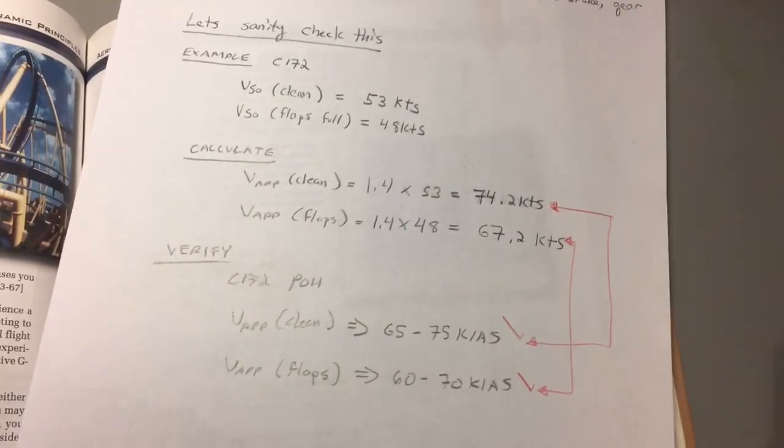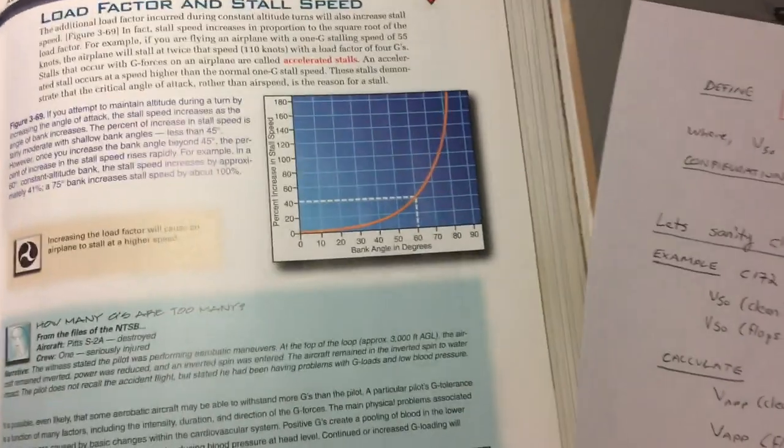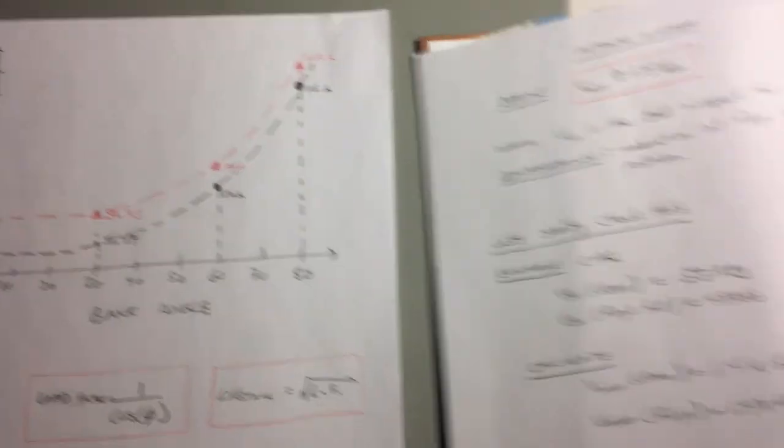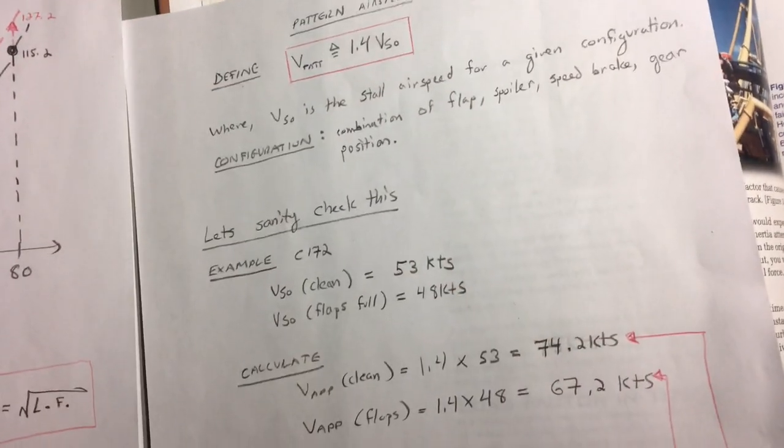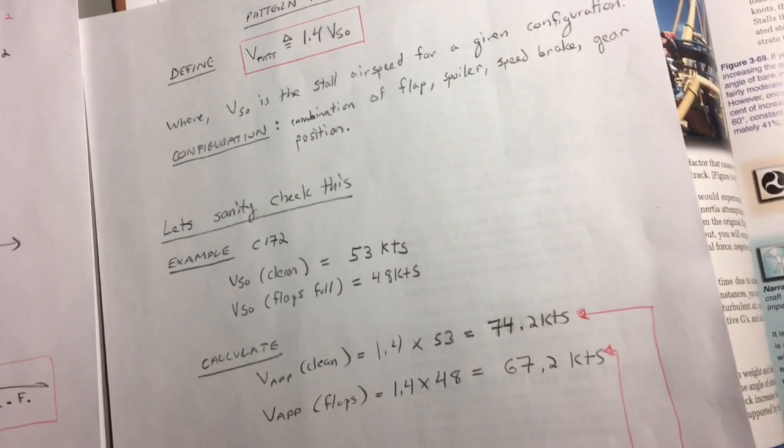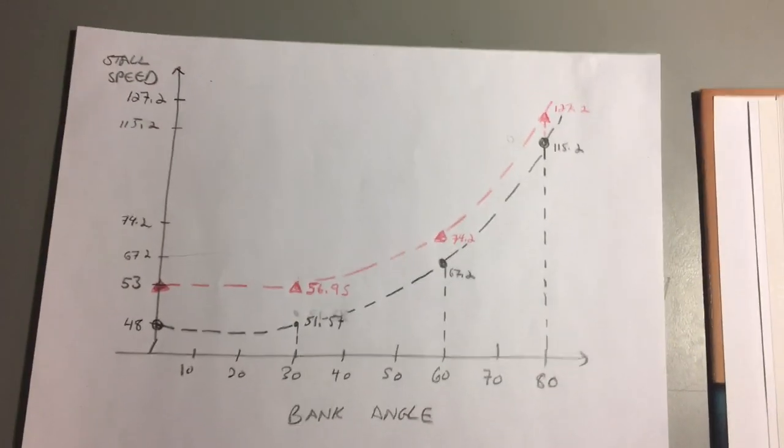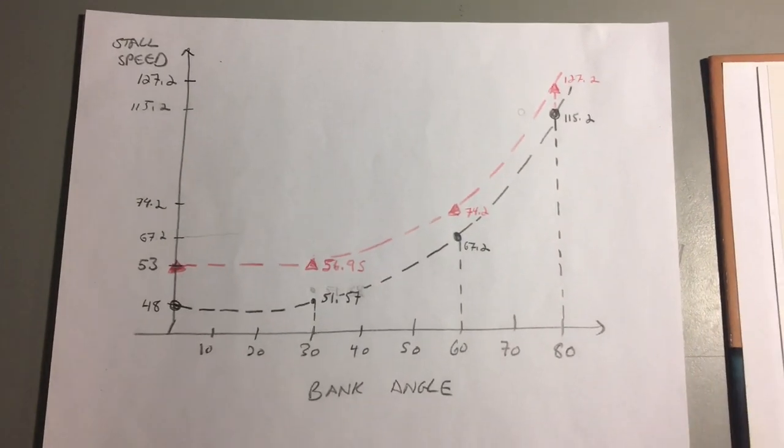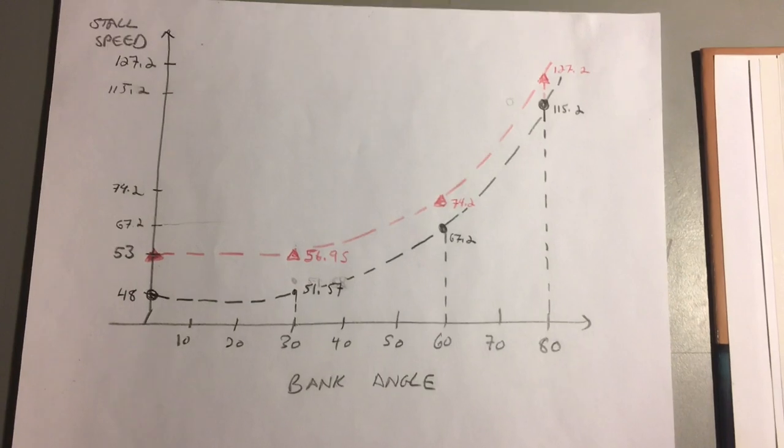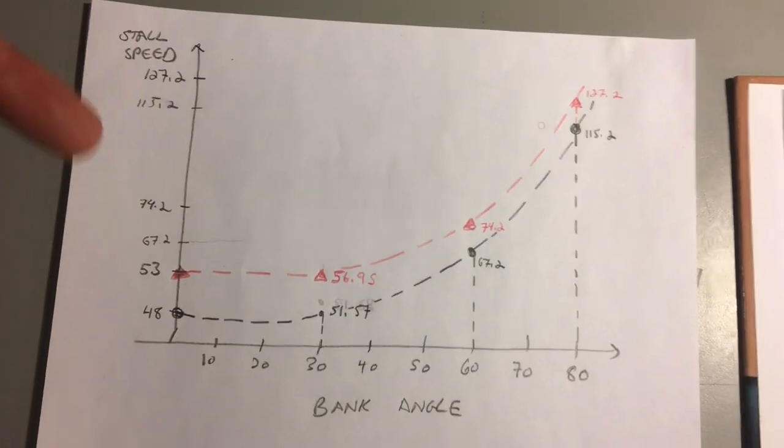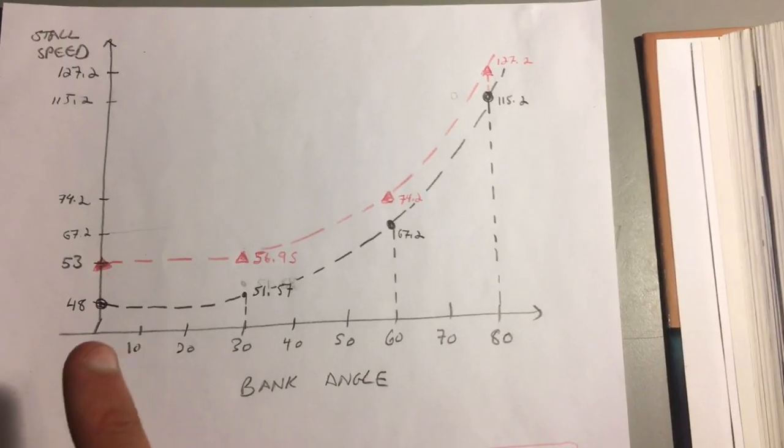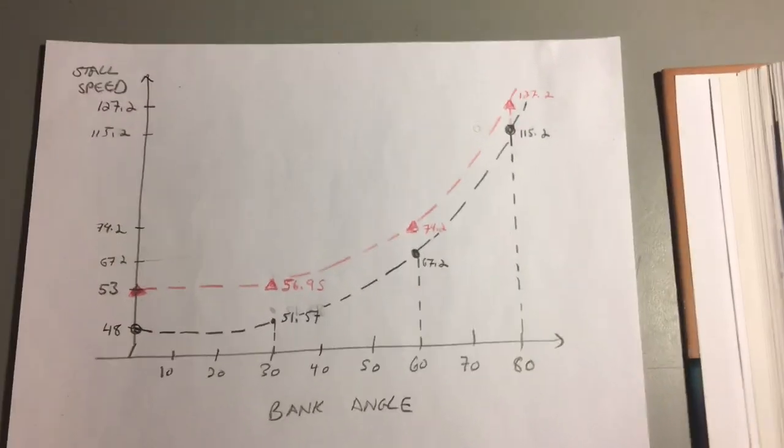Let's tie these numbers and this graph together in a tangible example of the Cessna 172. Remember our clean and dirty stall speeds were 53 knots and 48 knots respectively. I've taken those numbers and made a chart where you can see what the stall speed is on the y-axis. Here's stall speed increasing as you go up and bank angle increasing as you go from left to right all the way up to 80 degrees of bank.